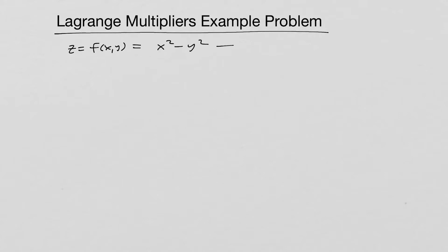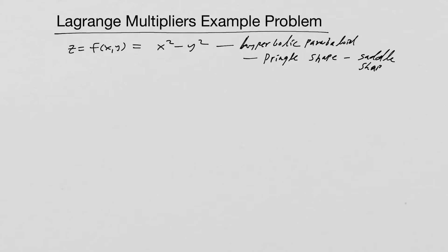So let's talk about this specific problem. What we have here is z equals f(x, y), and it's going to be equal to x squared minus y squared. I call this the hyperbolic paraboloid. It's also called the Pringle shape, named after that snack chip you can buy at the gas station. With the hyperbolic paraboloid, of course, it has this saddle shape — one x-parabola direction is upward, and the y-parabola direction is downward.